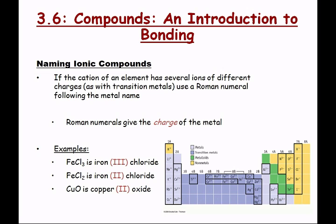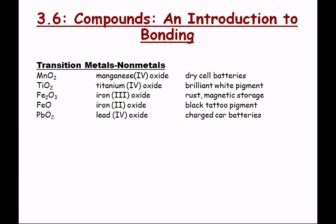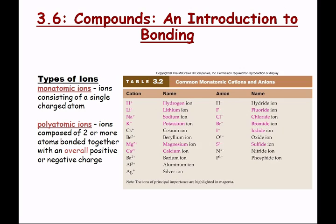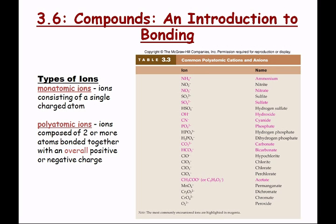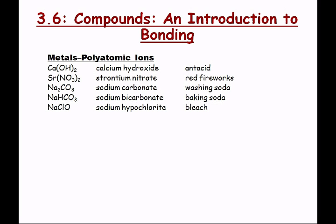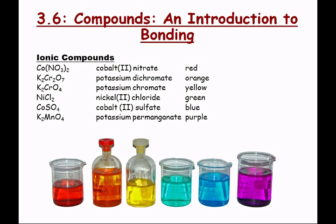Polyatomic ions are groups of atoms that carry a charge — for example, PO4 3-. This group of atoms has a 3- oxidation state. Unfortunately, you're going to have to memorize the list of polyatomic ions before Friday. It's not as difficult as it looks.